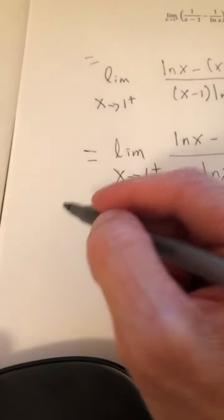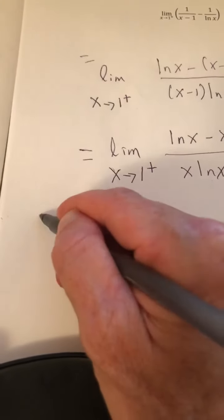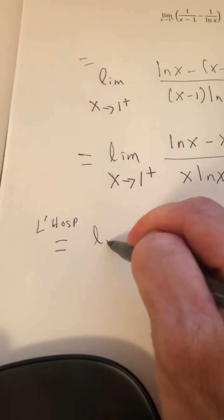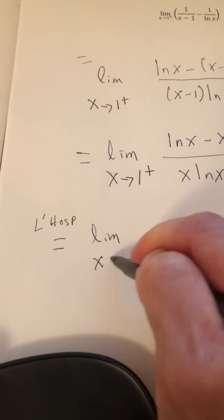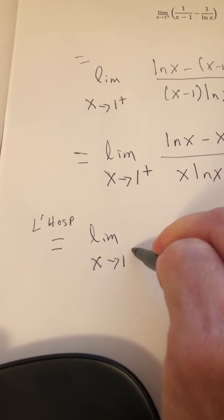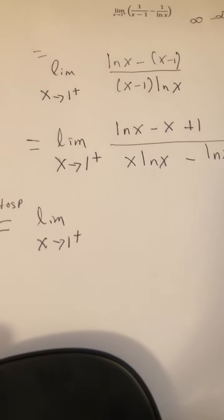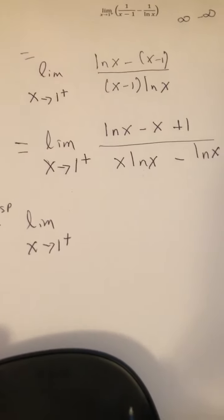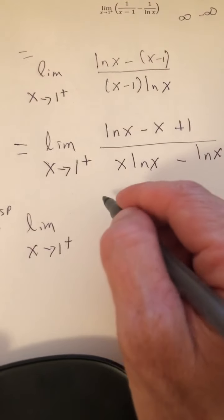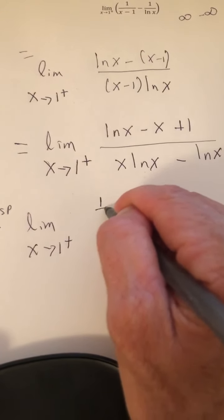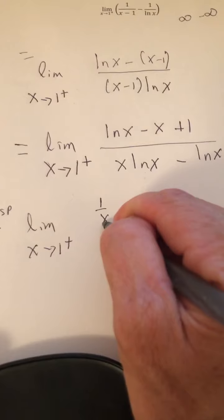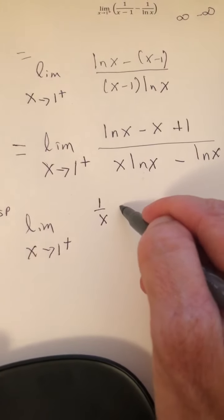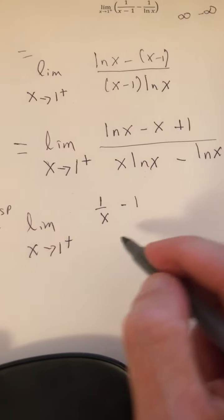So we're going to use L'Hopital's rule right now. So we have a follow-up limit. So we're going to differentiate the numerator, and we're going to differentiate the denominator. The derivative of L'n of x is 1 over x, and the derivative of negative x is minus 1, and of course the derivative of 1 is 0.